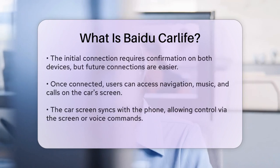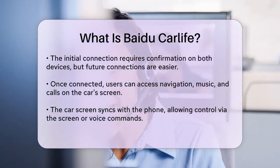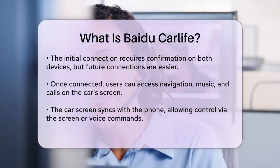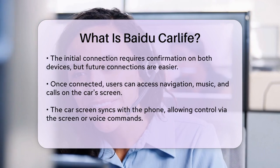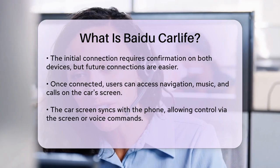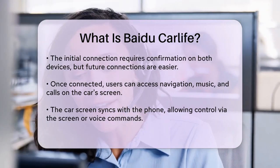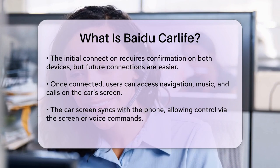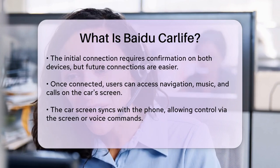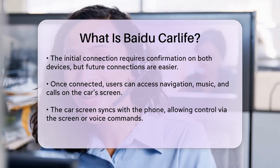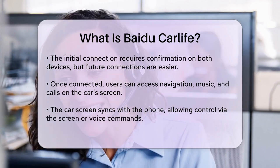Once connected, you can use various functions like navigation, listening to music, and making calls directly on the car's screen. The car screen will synchronize with your phone, allowing you to control CarLife functions either on the car screen or through voice commands using the Baidu voice assistant.